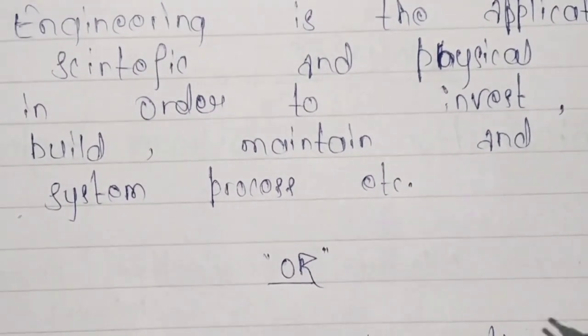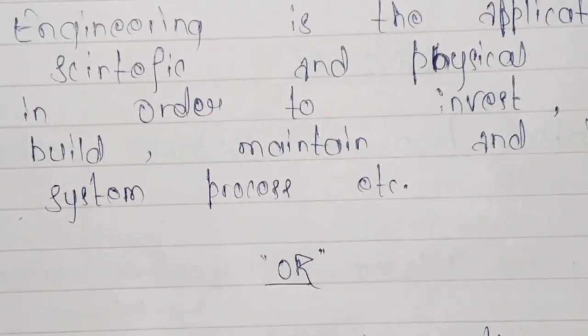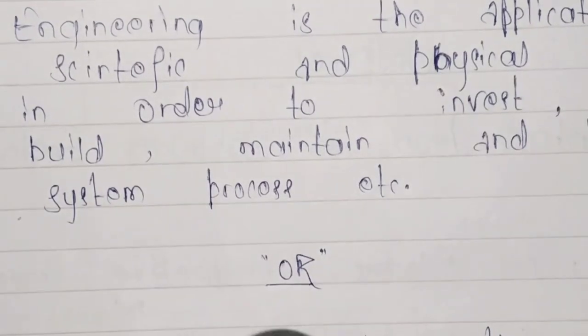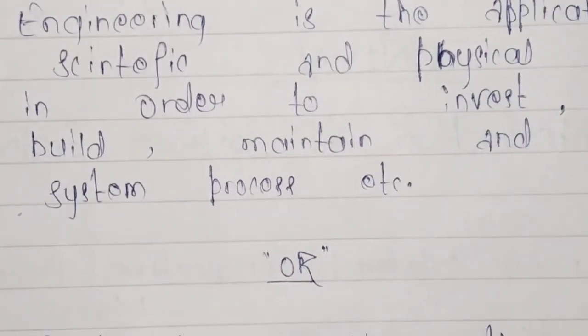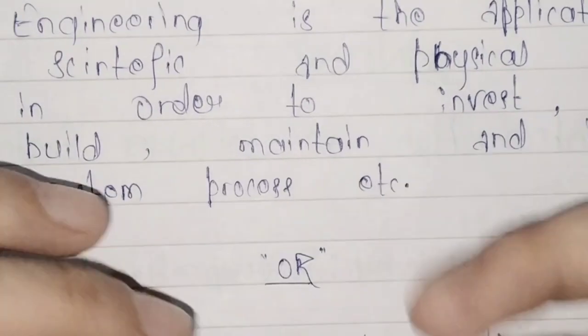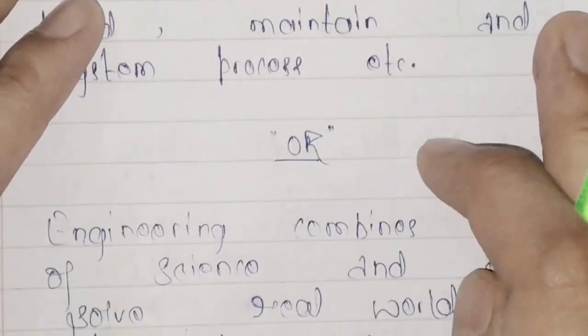So what is engineering? Engineering is the optimum utilization of all the resources that are present in our environment. And the utilization we are doing is basically in smart ways so that it will become easy for us.